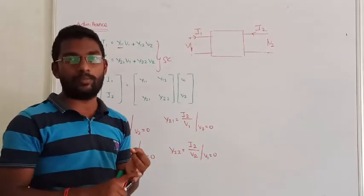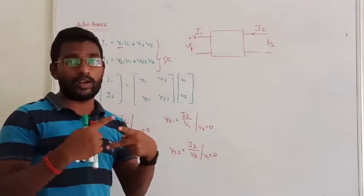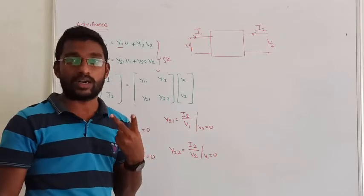These two are called drive point input and output admittance. The input parameter is called transfer admittance. That is output driving point impedance, input parameter, output parameter - that is called transfer impedance.